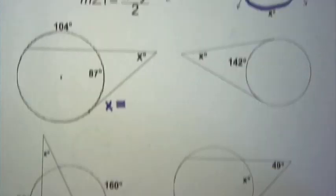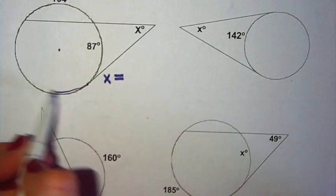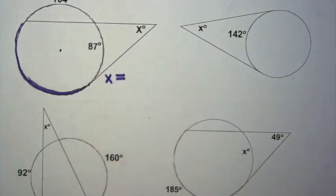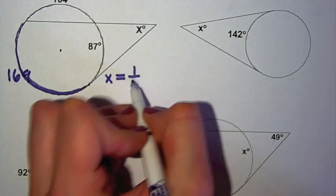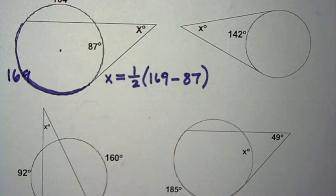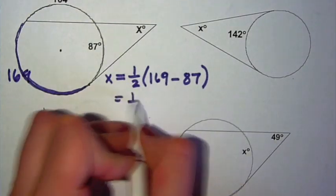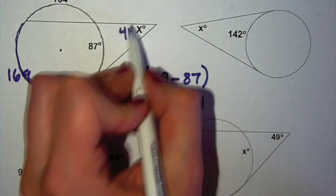So the first problem, we have the angle outside the circle. And it's going to be equal to the difference between the two arcs. But the two arcs aren't shown. So we have to find the other arc before we can go on. Do 360 minus 104 minus 87. And you'll get that that arc is equal to 169 degrees. So now we can set up our formula. X is one-half the difference between 169 and 87. So x is equal to one-half 169 minus 87. That's one-half times 82, which is going to give you 41. So that angle out there is 41 degrees.